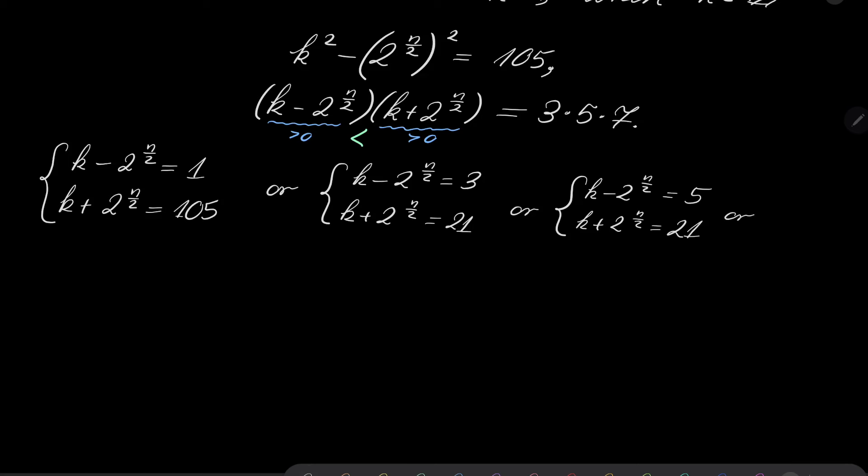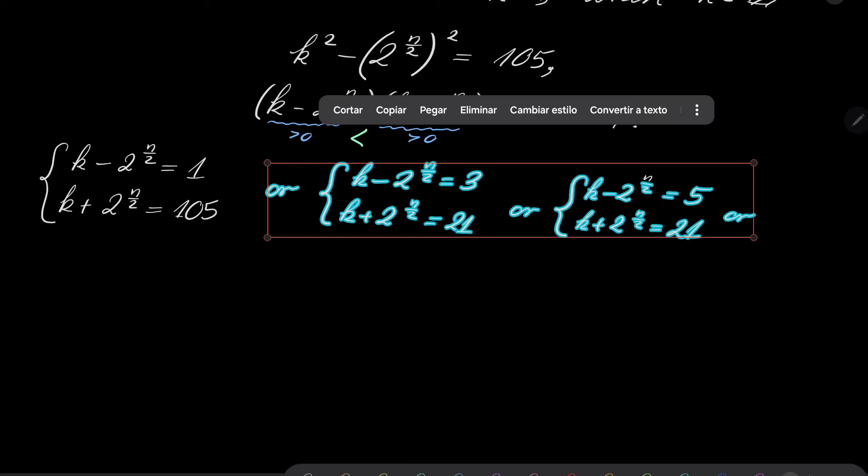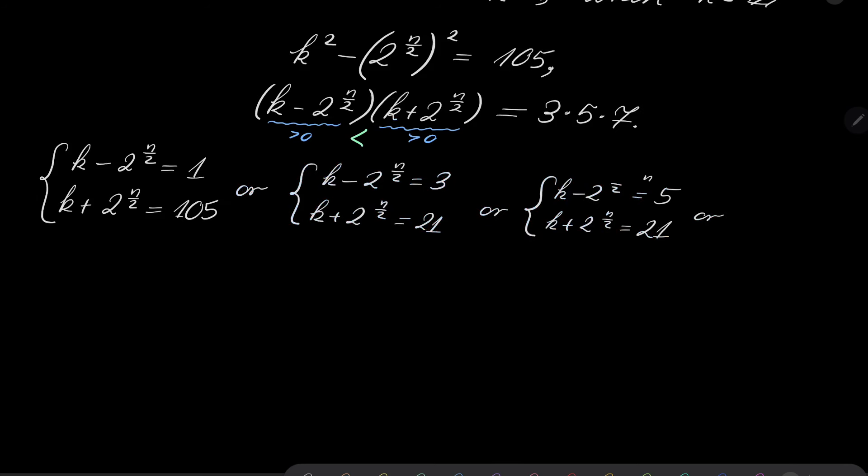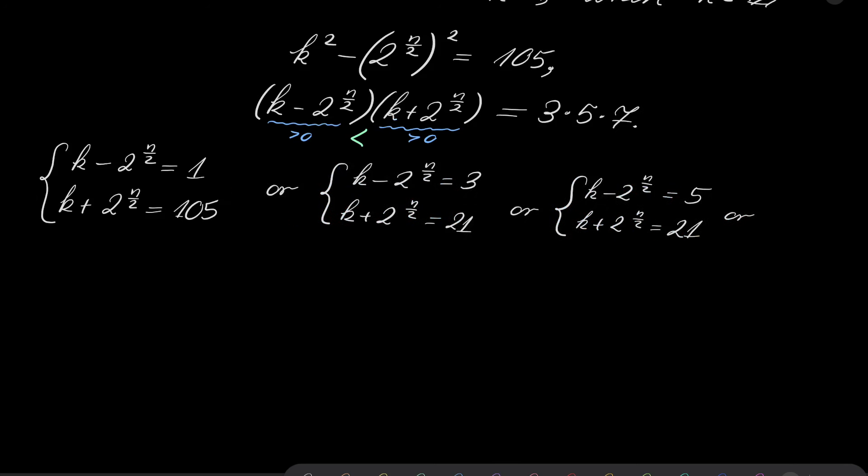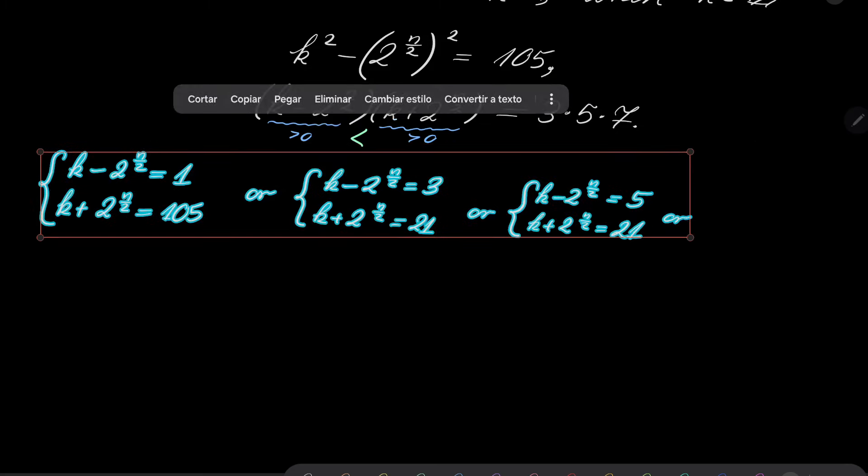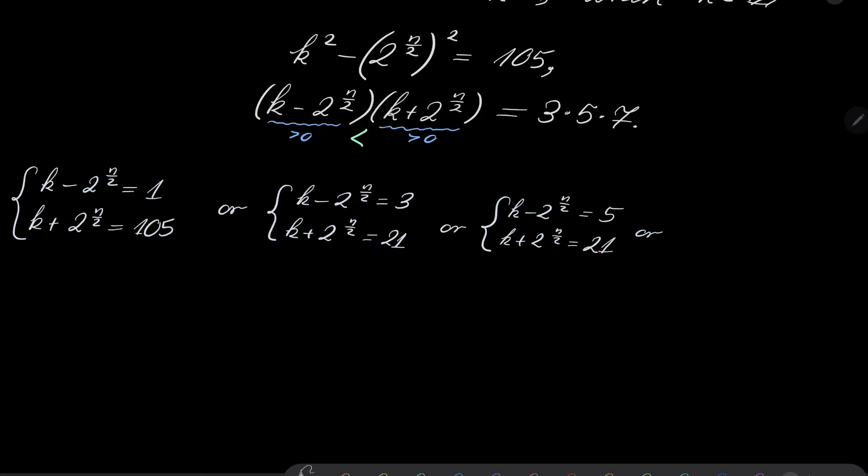Or, the last possibility is that k minus 2 to the power of n over 2 equals 7, and k plus 2 to the power of n over 2 equals 15. All right.